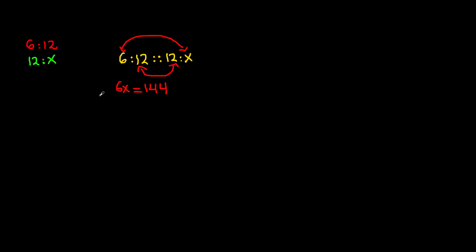In order to solve for x, we need to get rid of the six using inverse operations. Since six is being multiplied by x, we divide both sides by six to eliminate it and leave x by itself. Remember, whatever you do to one side of the equation you must do to the other. So x equals 144 divided by 6, which is 24. Therefore x equals 24.